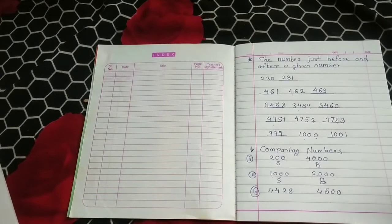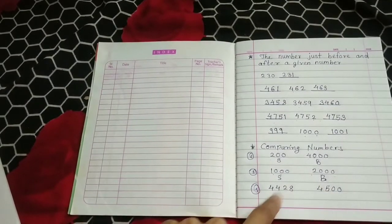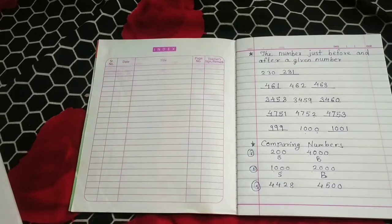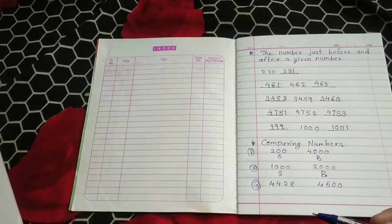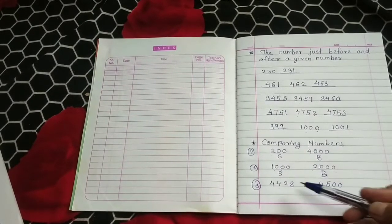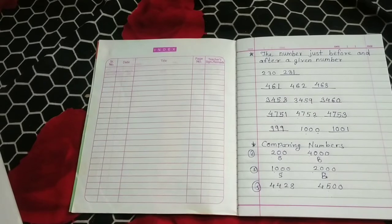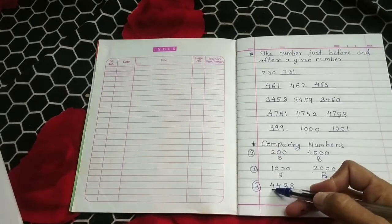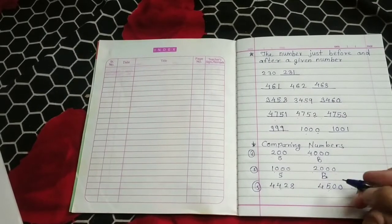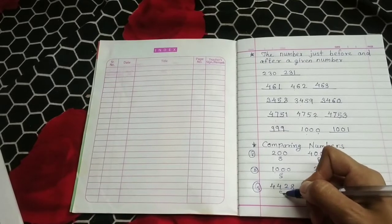In the third example, both numbers are 4-digit numbers and their thousands digit is also the same. When the thousands digits are equal, we compare the hundreds digits. Here the hundreds digit is 4 in one number and 5 in the other — the numbers are 4428 and 4500. Since 500 is greater than 400, 4500 is bigger and 4428 is smaller.